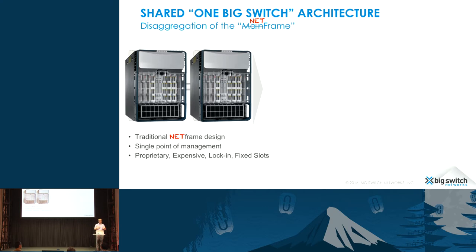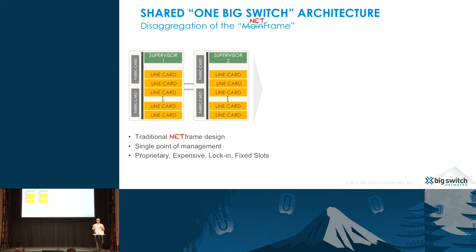All of our products are based off of this one Big Switch architecture notion. If you actually have a traditional chassis-based switch — something like a Nexus 7K or a Cat 6500 — and you look under the covers, there are actually three components: roughly a supervisor card, something that looks like a PC, a line card, and a bunch of fabric backplanes that the line cards plug into using a cloth topology.